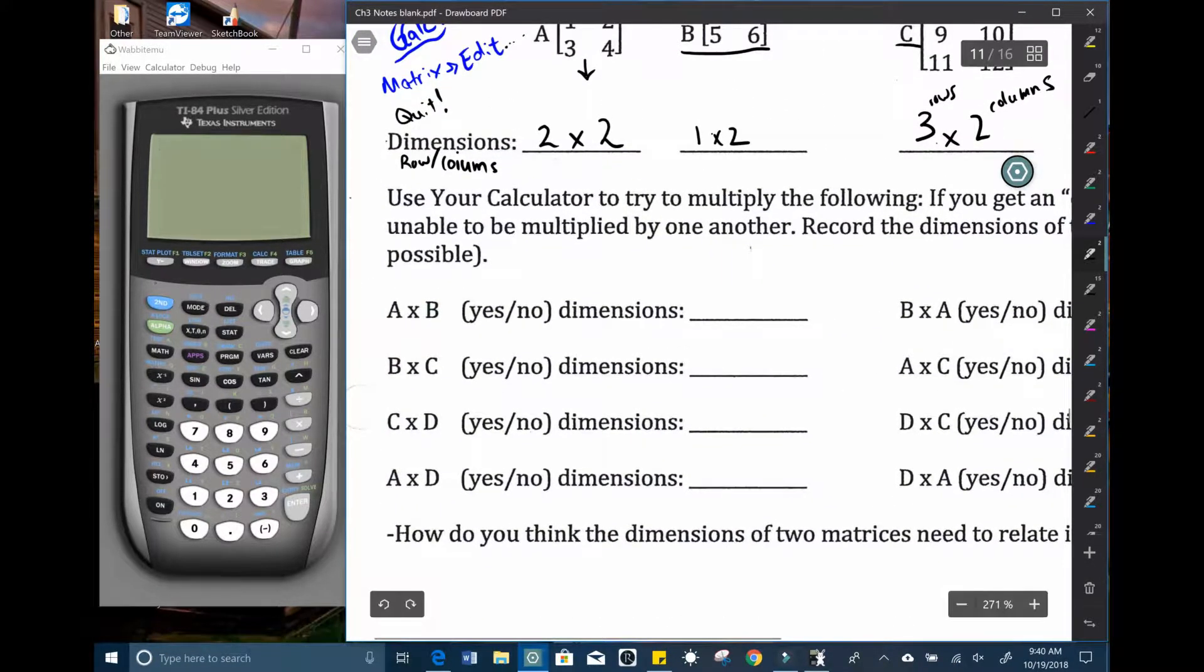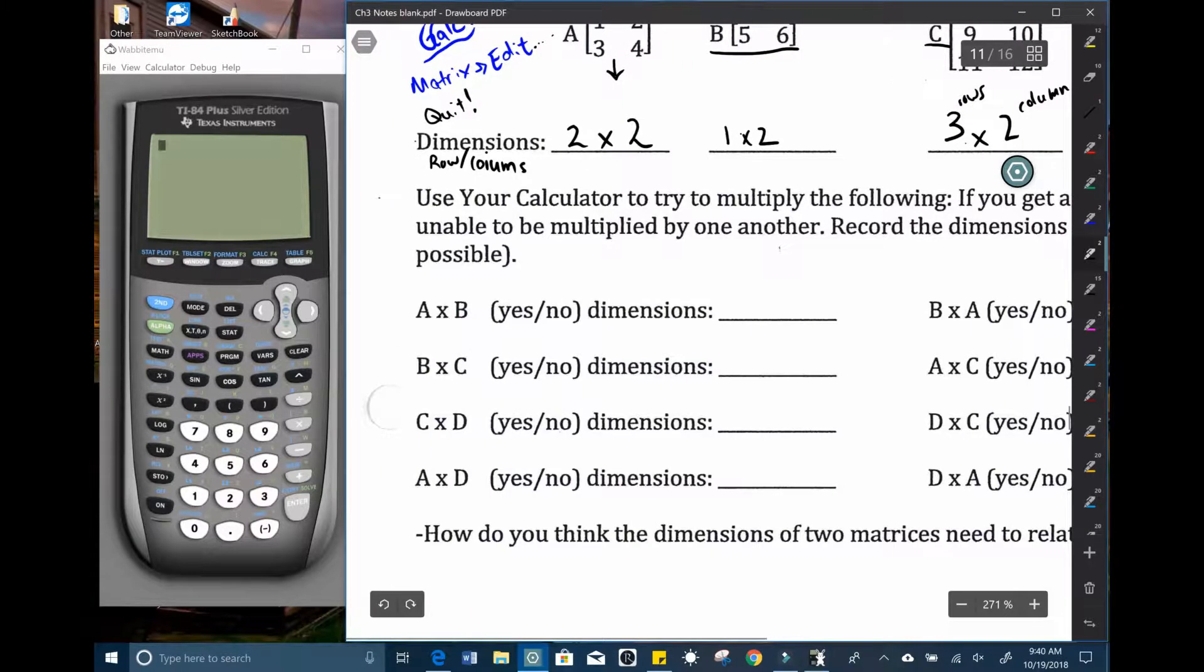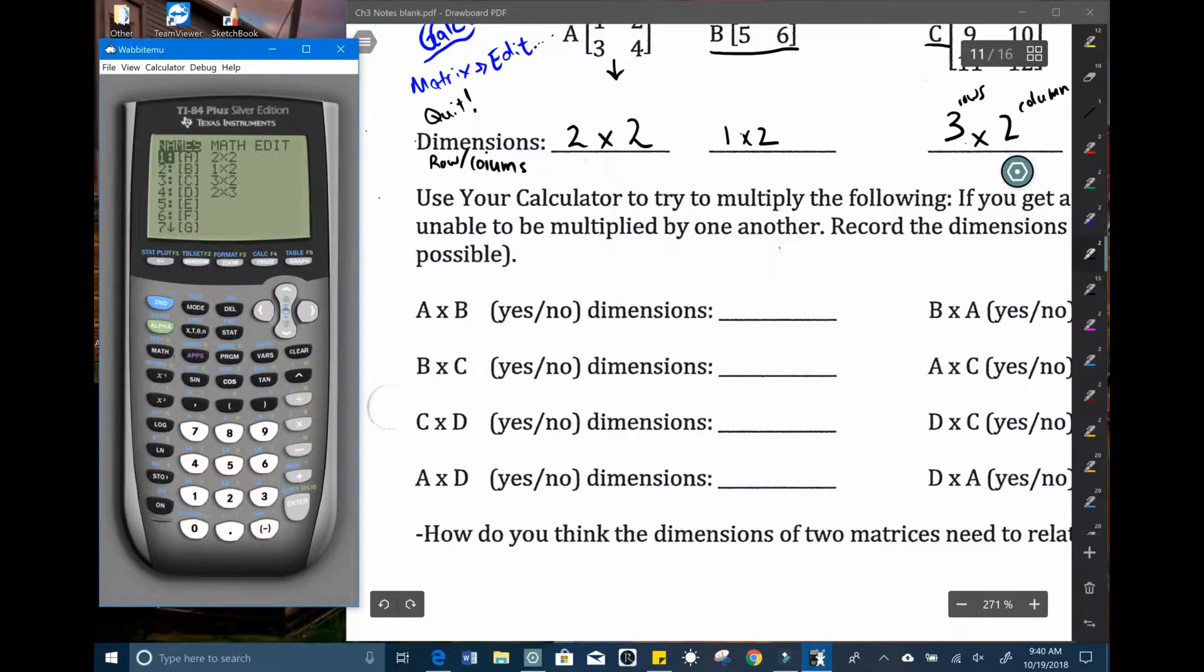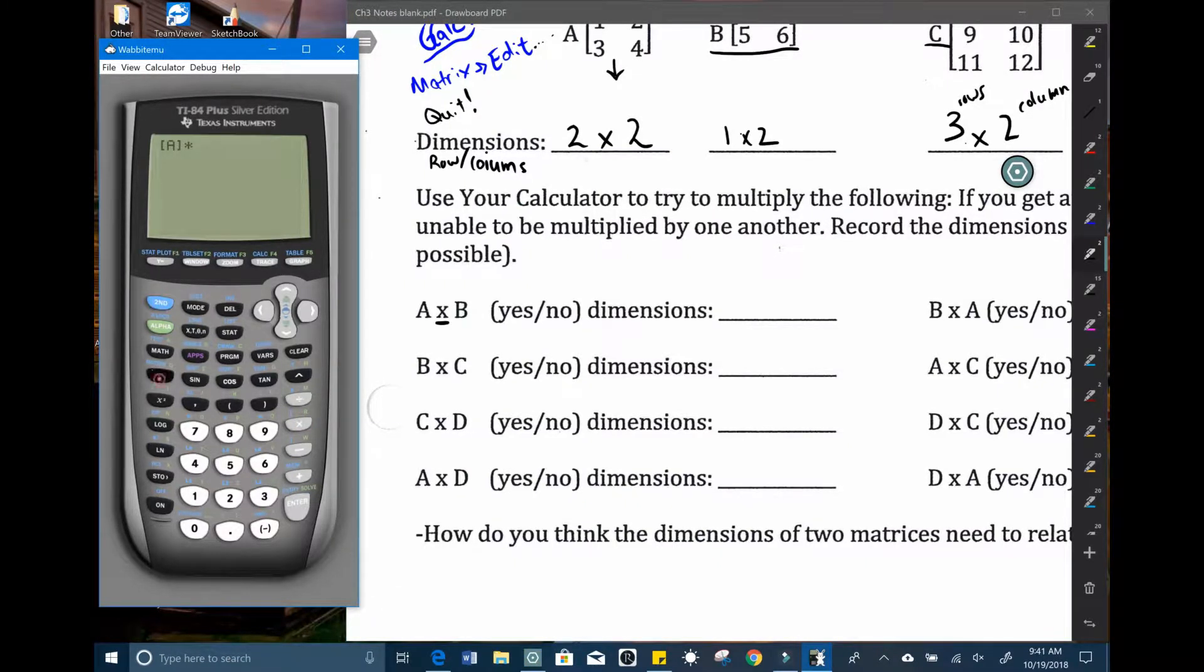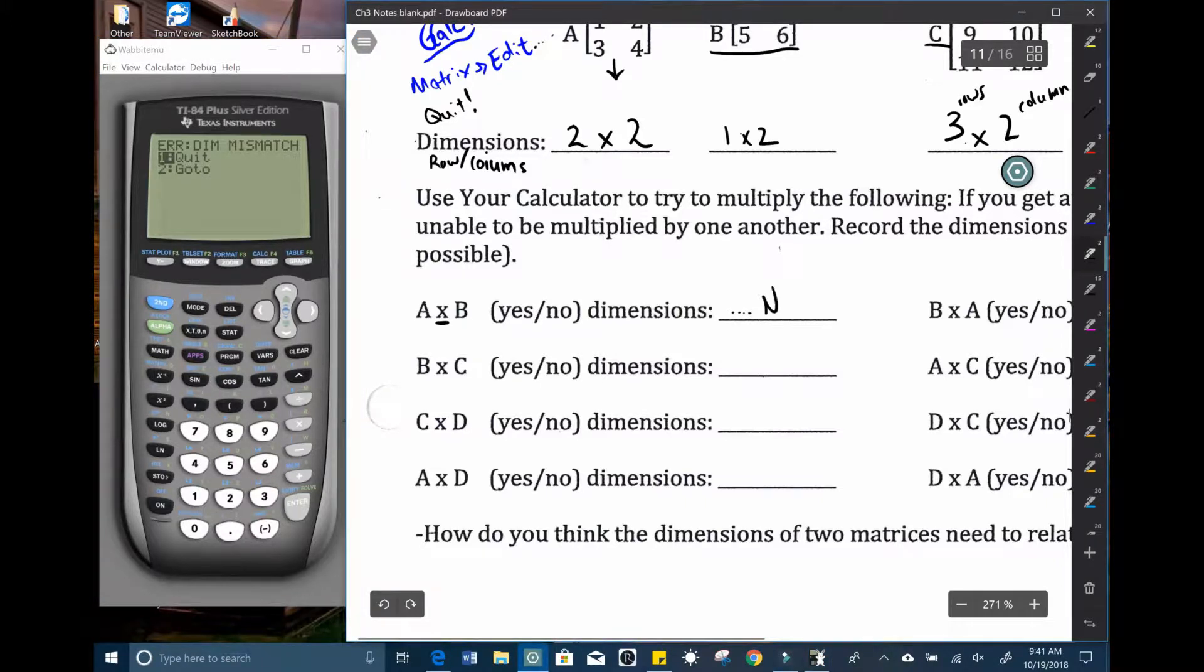So we're going to try and take matrix A times matrix B. To do that we're going to call upon each matrix in the calculator. Again we're going to enter into matrix world. Now we don't need to edit them, we're just going to call them by their names. So we'll hit enter. A will appear. We want to multiply. So hit multiply. And then second matrix B, so number two. And we try and multiply. And that doesn't work. Hmm. No. So not possible. We're going to learn that different matrices can or can't be multiplied. So it does not work.